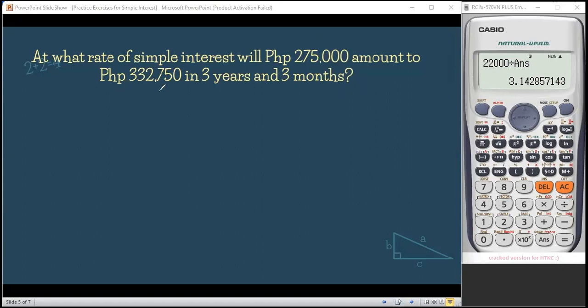Question number 3. At what rate of simple interest will 275,000 pesos amount to 332,750 pesos in 3 years and 3 months? So what's being asked is at what rate? So that means it's missing in the problem and that's what we're looking for. So at what rate of simple interest will 275,000 amount to? So meaning, from 275,000 pesos, at what rate will 275,000 pesos grow to 332,750 pesos. So meaning to say, this is our initial deposit. So that means it's now our principal. So that is 275,000. And this is now our future value.